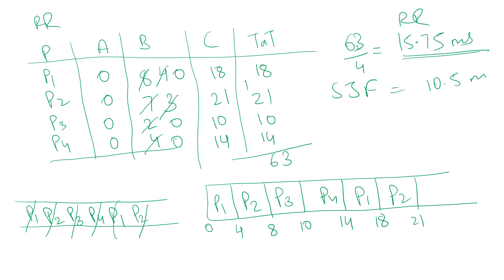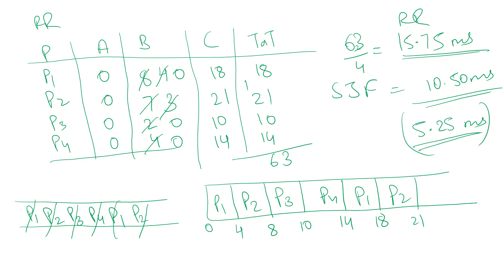We wanted to find the absolute difference between the average turnaround times of the two algorithms. SJF gave 10.5 milliseconds and Round Robin gave 15.75 milliseconds. Subtracting these gives 15.75 - 10.5 = 5.25 milliseconds. That is the absolute difference between the average turnaround times for these two scheduling algorithms, so the answer is 5.25.